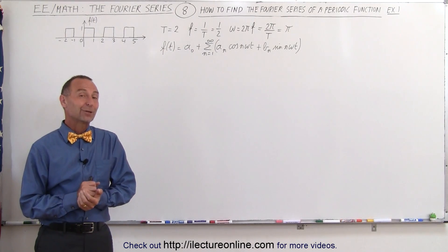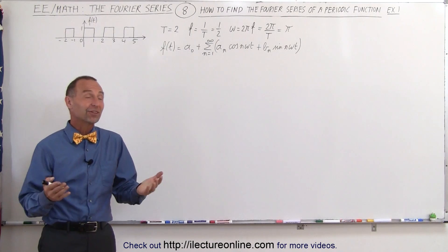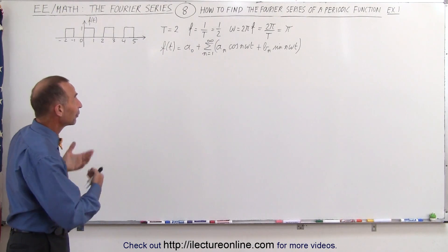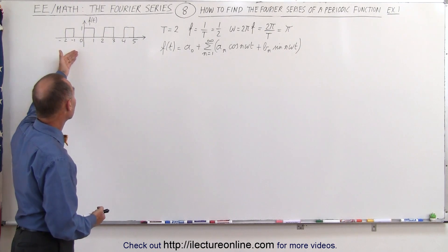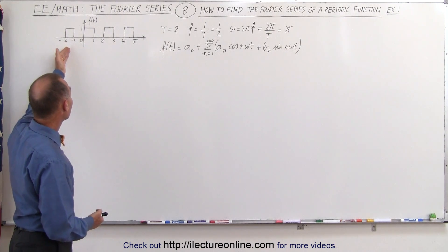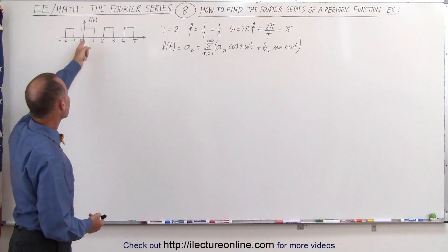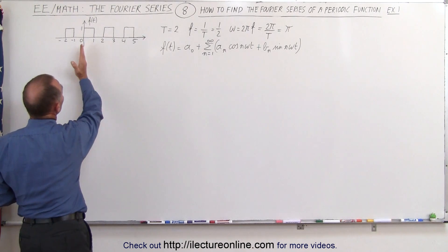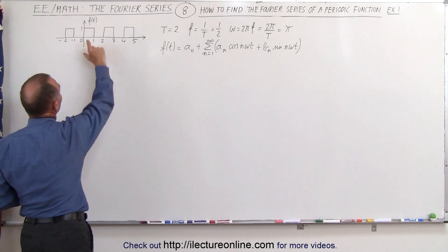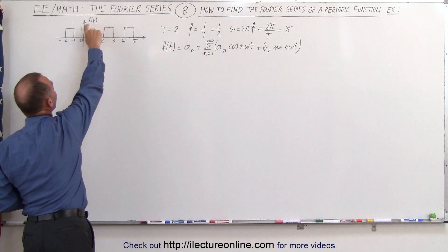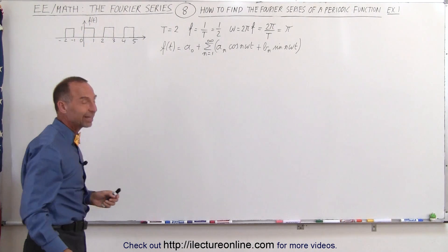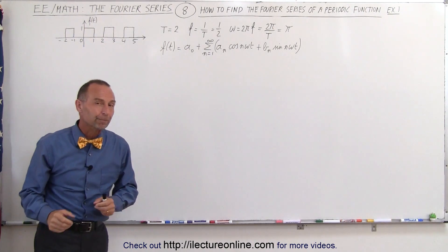Welcome to ElectronLine. Here we have our first example of how to find the Fourier series of a periodic function. It's a periodic function that has a period equal to 2, so you can see that the period is from here to there. The function is equal to 1 for the first half of the period and equal to 0 for the second half of the period.